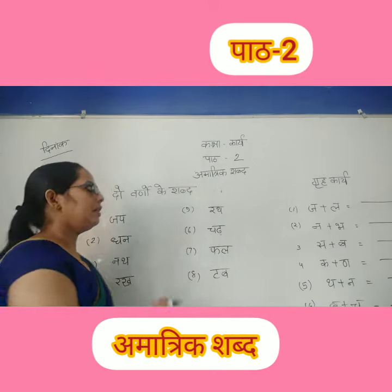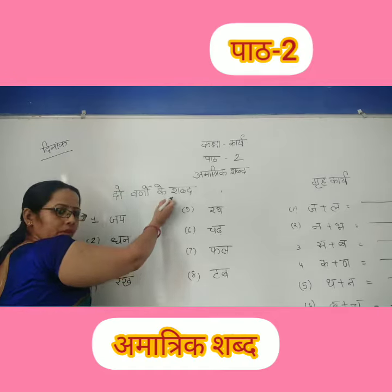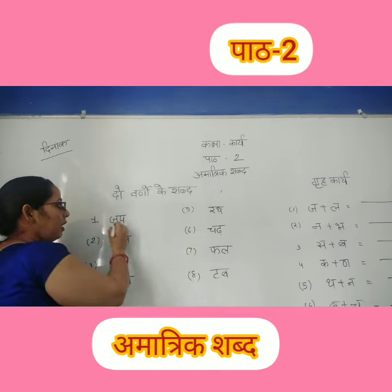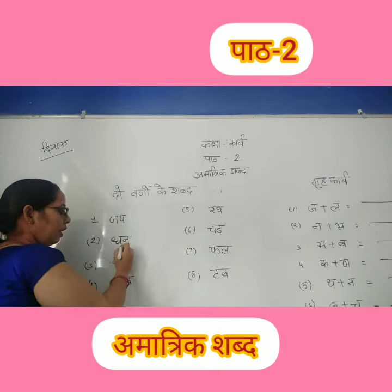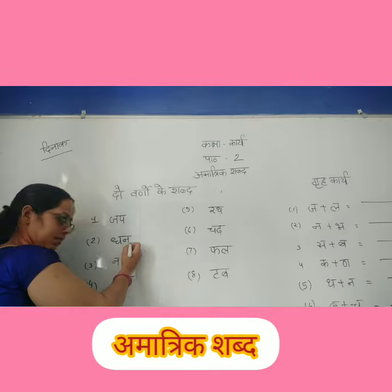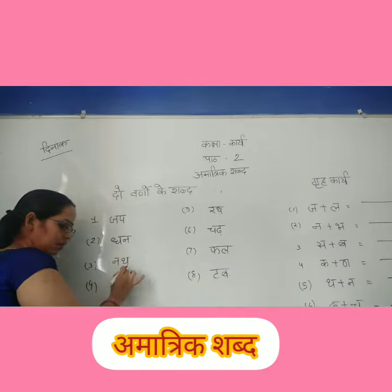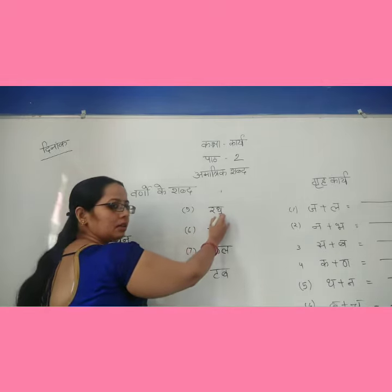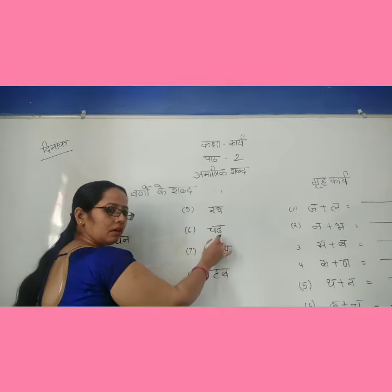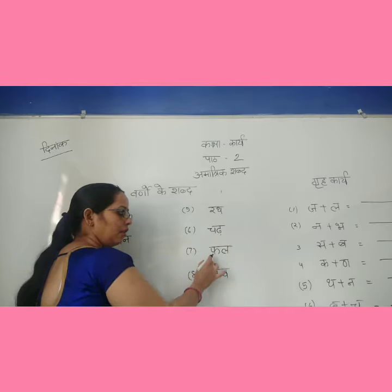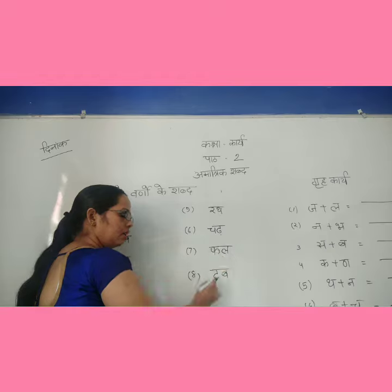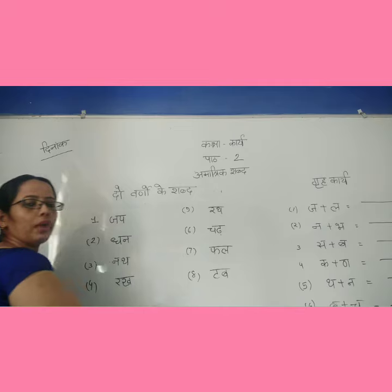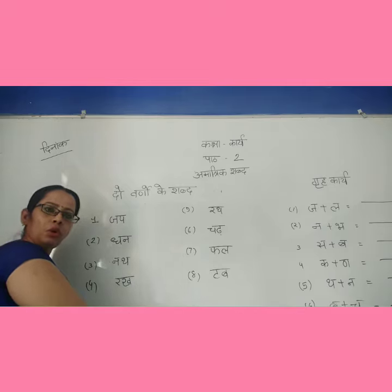जैसे सबसे पहले आते हैं दो वर्णों के शब्द, जो बिना मात्रा वाले हैं। जैसे: जप, धन, नथ, रख, रथ, चढ़, फल, ताब — ये सभी दो वर्णों के शब्द हैं।